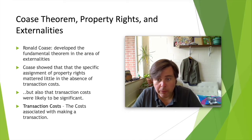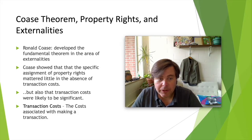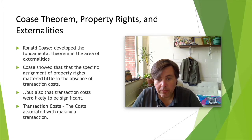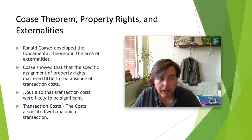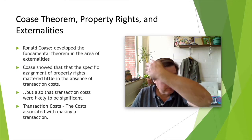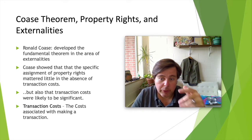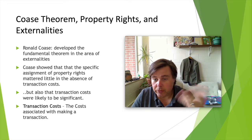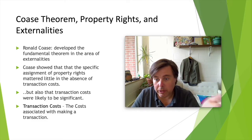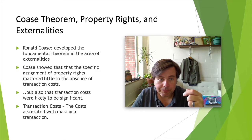A central idea to environmental regulation — and indeed all regulation — is the assignment of property rights. If we're going to require mitigation of environmental damages, or if we're to put restraints on how we can use the environment, then we need some idea about who's responsible for doing that: is it the federal government, an individual, a business, or a combination thereof?